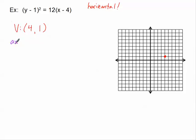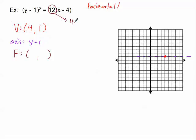The axis of symmetry, since we're going sideways, is the horizontal line through the vertex: y equals 1, which is always the value of k. Now let's find the focus. From the equation, 4a equals 12, so a equals 3. Since a is positive, I'm counting 3 units in the positive direction from the vertex — so the focus is at (7, 1).